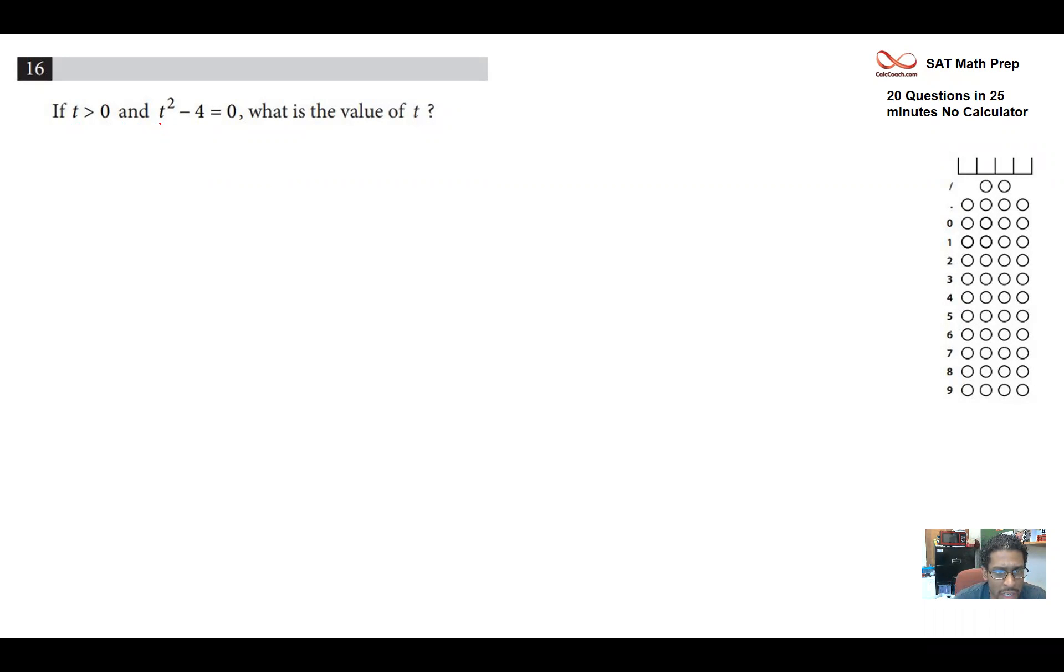So we're told that t squared minus 4 equals 0, and t must be positive. Solving this, we know that it's plus or minus 2. We have factoring as t plus 2 and t minus 2 equals 0. So it's either going to be a negative 2 or positive 2, and t must be positive. So the value of t is 2.